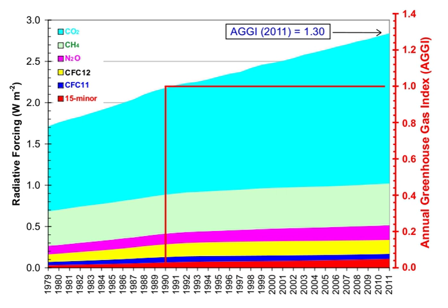The global warming potential depends on both the efficiency of the molecule as a greenhouse gas and its atmospheric lifetime. GWP is measured relative to the same mass of CO2 and evaluated for a specific timescale. Thus, if a gas has a high radiative forcing but also a short lifetime, it will have a large GWP on a 20-year scale but a small one on a 100-year scale. Conversely, if a molecule has a longer atmospheric lifetime than CO2, its GWP will increase when a longer timescale is considered.